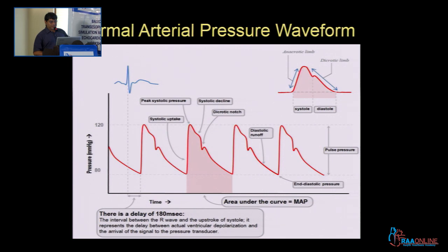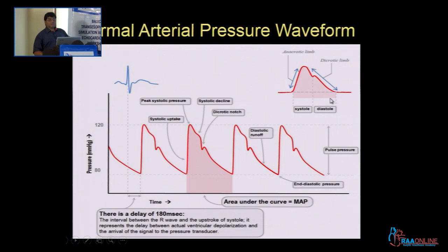The area under the pressure curve represents the mean arterial pressure when divided by the cycle time. The upstroke up to the dicrotic notch represents systole, and the area after the dicrotic notch represents diastole.